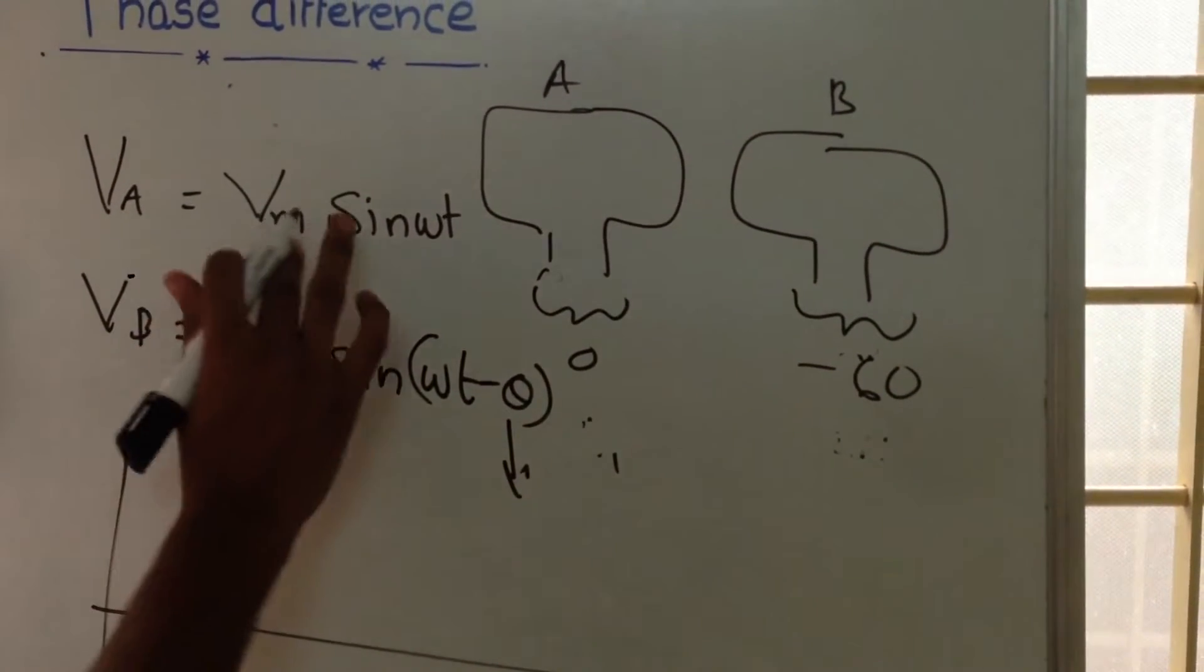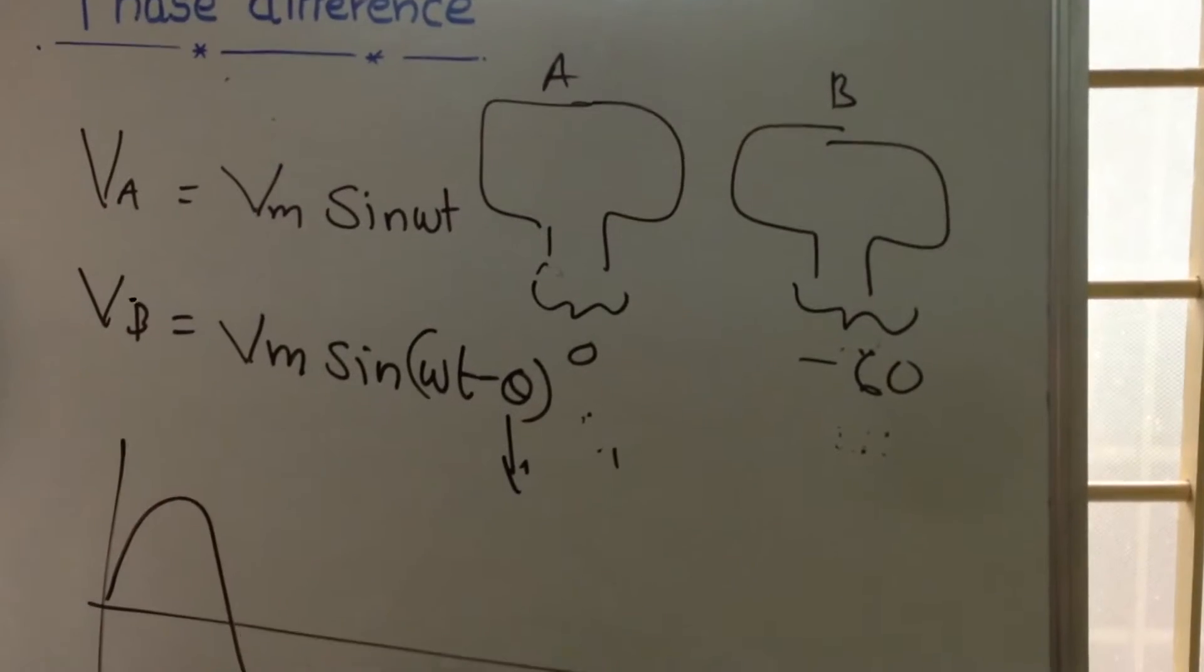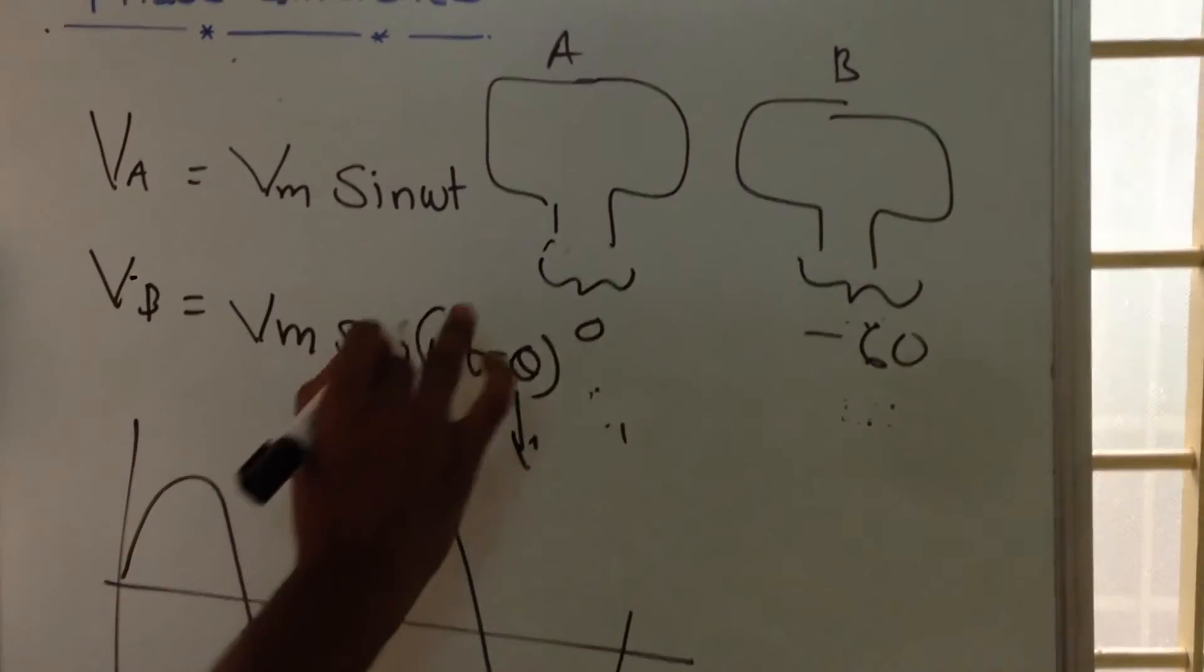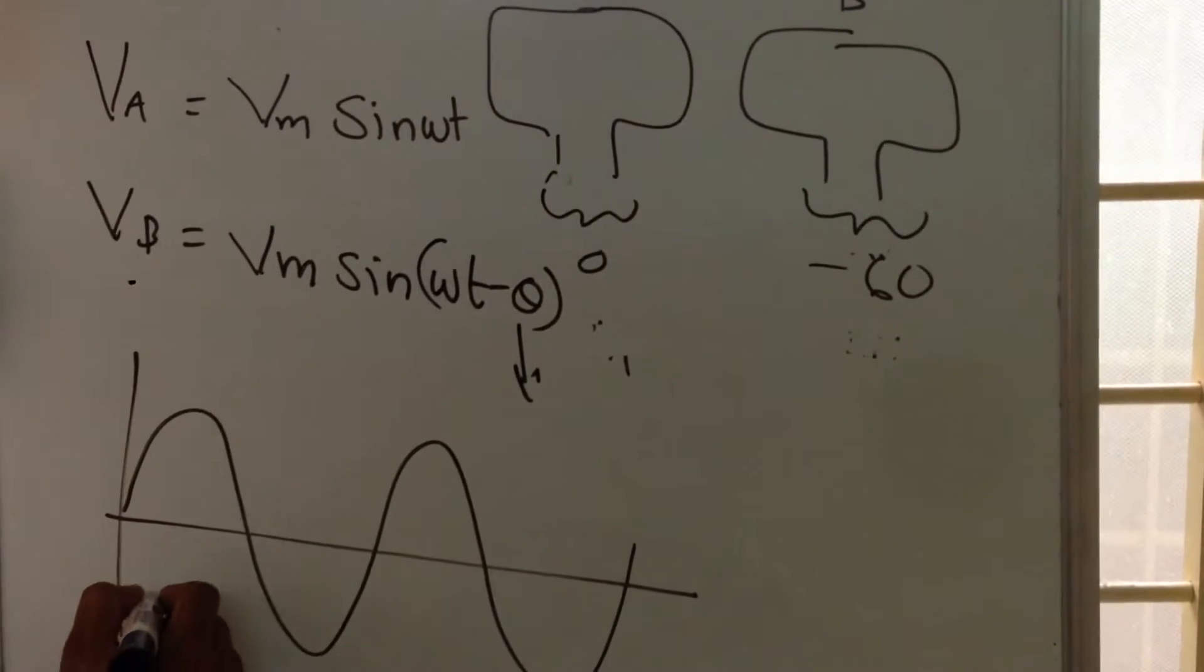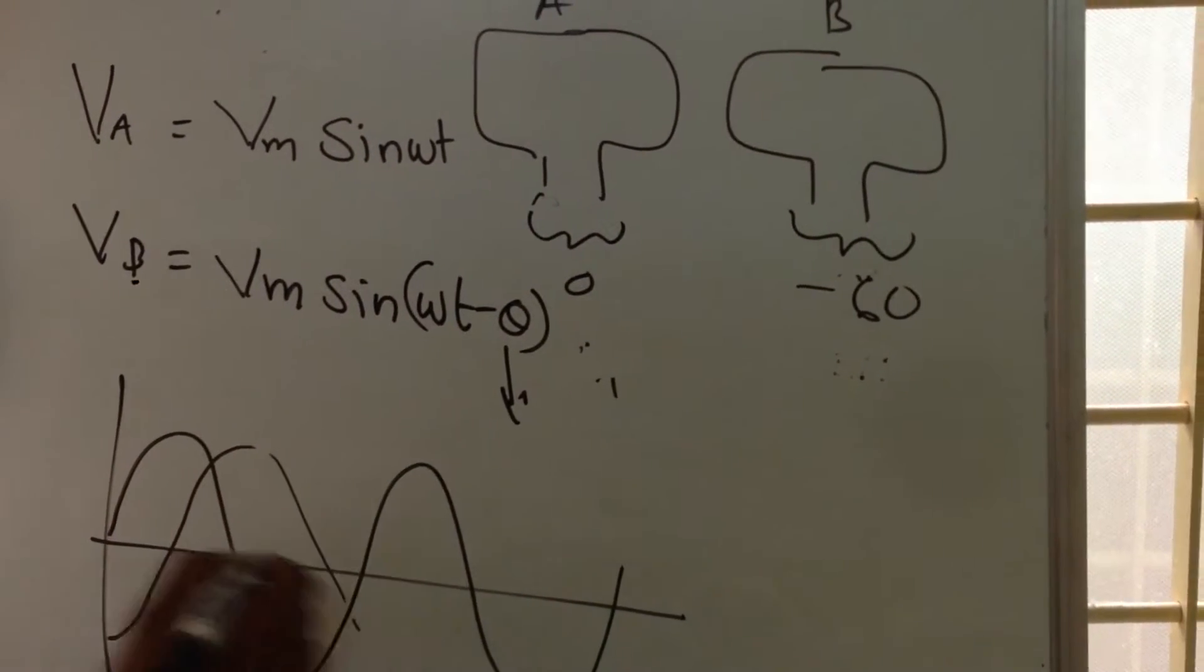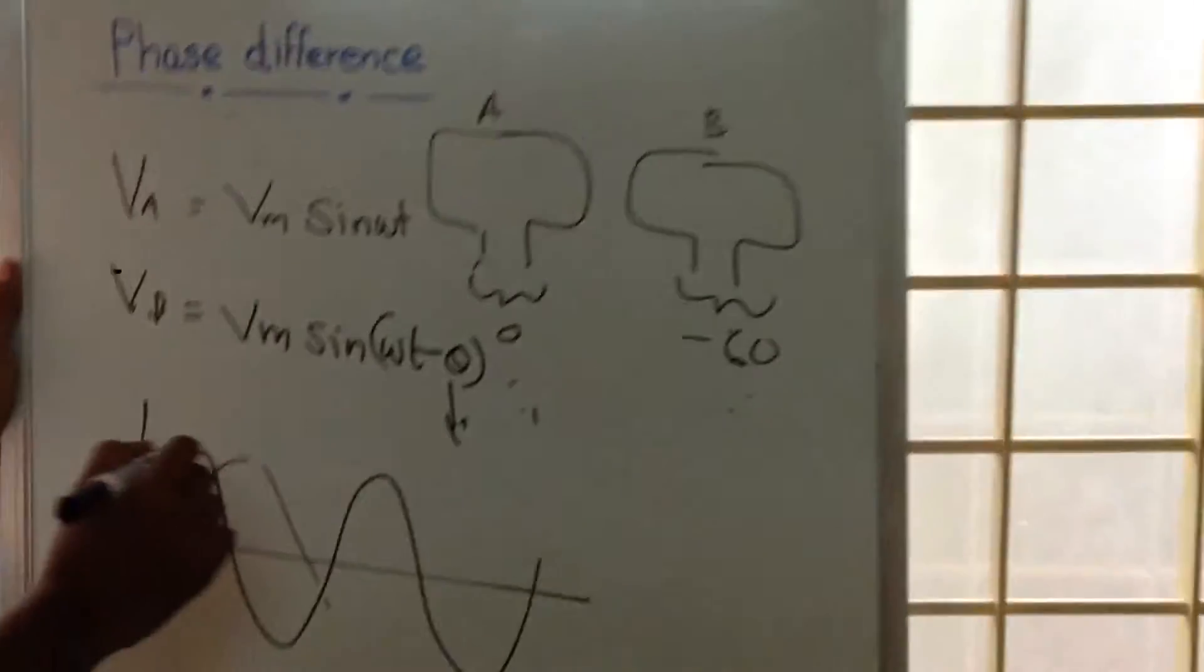In graphical representation, Vm sin(ωt) will be like this, and then the second one VB will be in such a way that it will be somewhat like this, that means this angle will be θ.